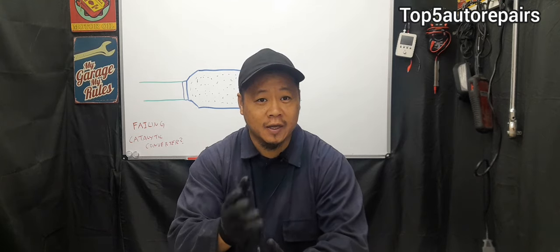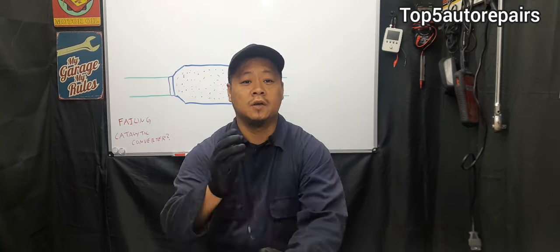The first common sign is going to be the check engine light turning on and it's going to trigger some sort of catalytic converter codes. For example, you may get P0420 code catalytic efficiency below threshold. If you're getting this code, there's a very high chance that your catalytic converter is failing.